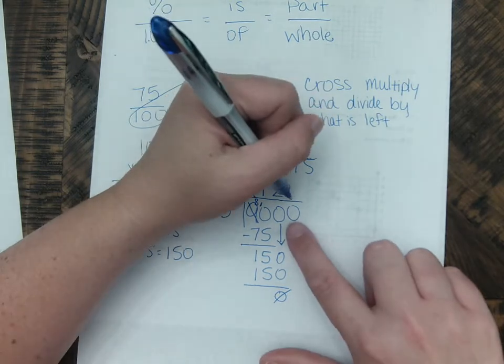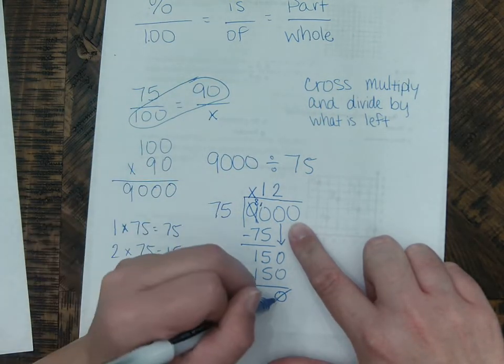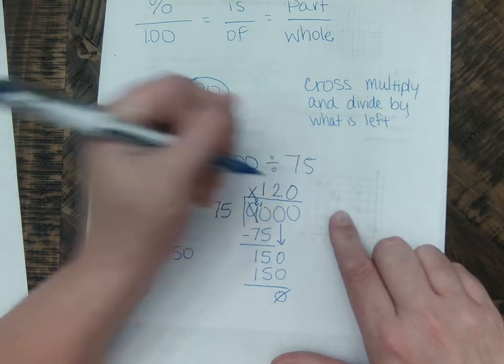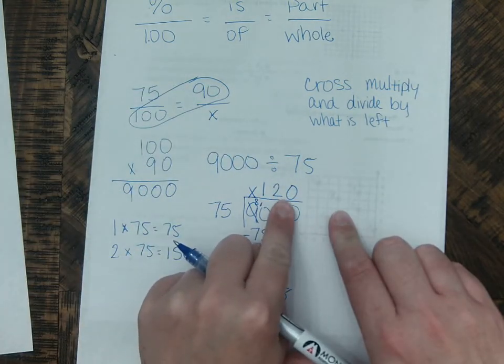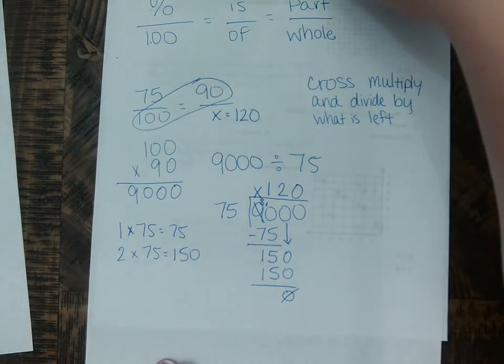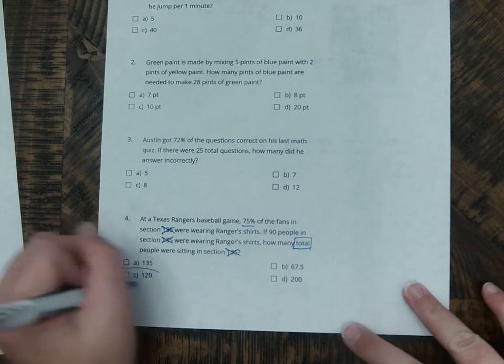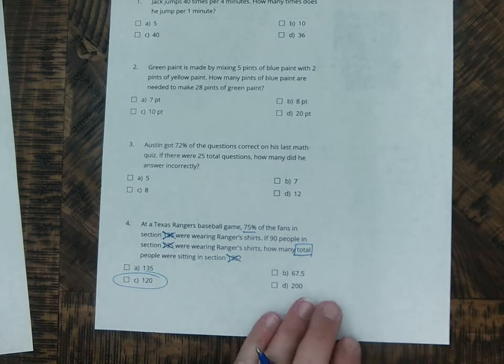But I'm not done because there's another number right here. So if this is 0, 75 can go into 0, 0 times. So I'm left with the answer, which is 120. And if we go back to number 4, we can see our answer choice then is going to be C.